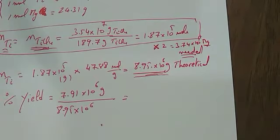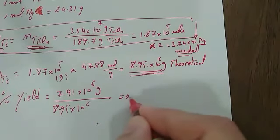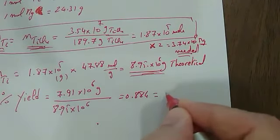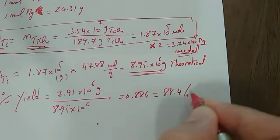We divide these two numbers: 7.91 divided by 8.95 equals 0.884, or 88.4 percent.